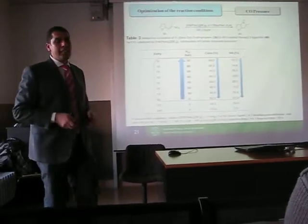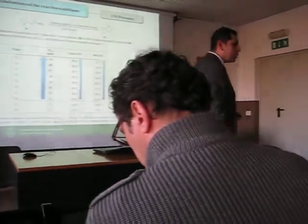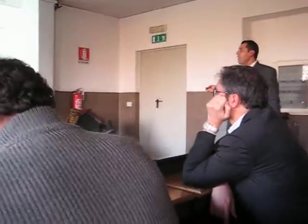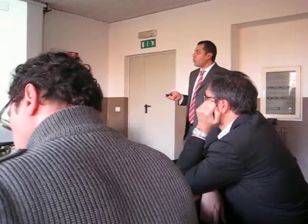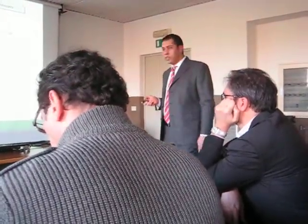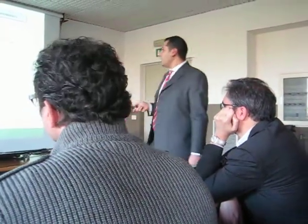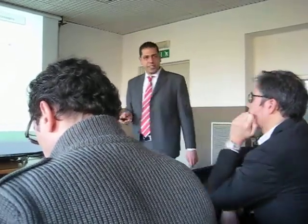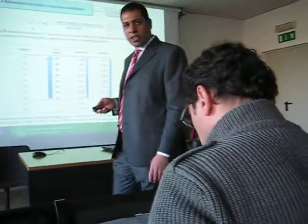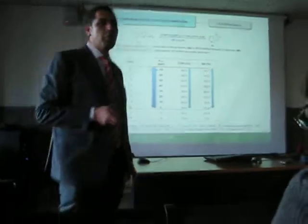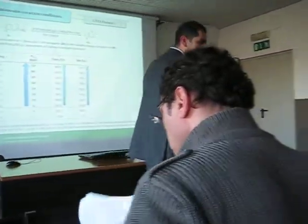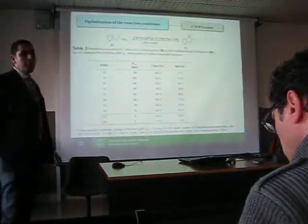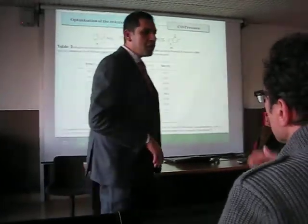Concerning the optimization of reaction parameters, we start with the pressure of carbon monoxide. The model reaction was performed under different CO pressures varying from 1 bar to 70 bar. We observed that increasing the pressure from 5 bar to 70 bar led to a slight decrease in both substrate conversion and product selectivity, with maximum product selectivity reached at 5 bar. Reducing the pressure further to 1 bar caused a drop in both conversion and selectivity.